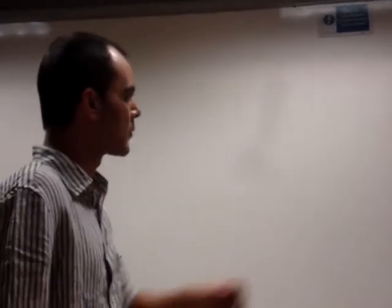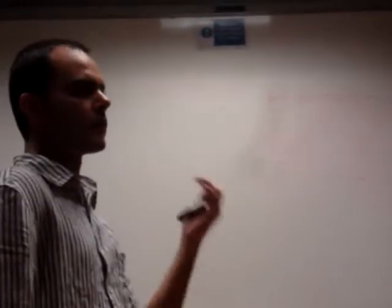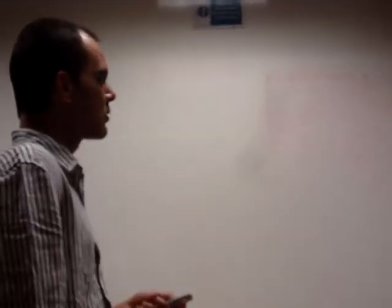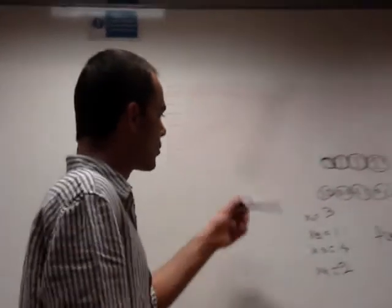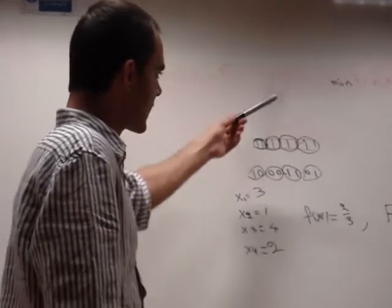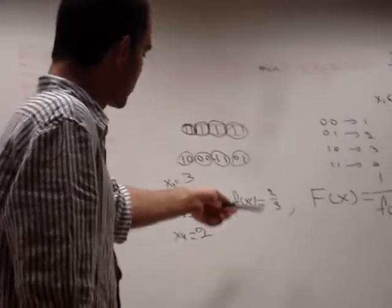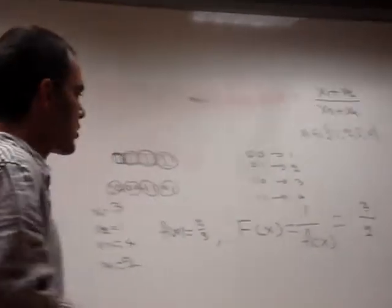The first step, when we have the population, we start from a random initial population. Then we decode the chromosomes to solutions of the initial problem. We find the objective function and the fitness function. And then we go to the second step, which is the selection process for the parents.